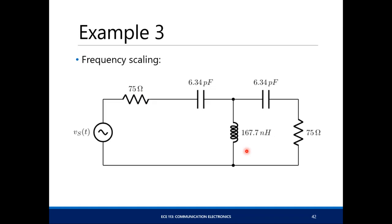Then scale the frequency: since the cutoff is at 100 MHz, divide all reactive elements by 100 MHz times 2π. This completes the low-pass and high-pass filter design.